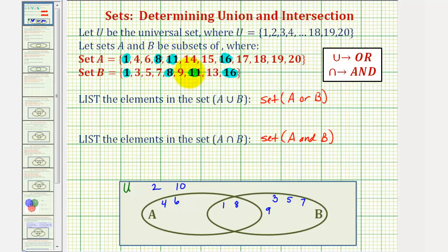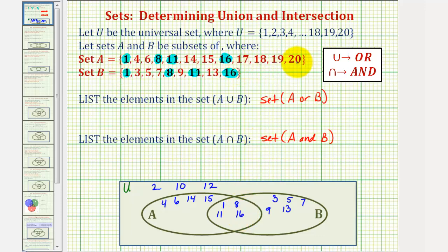Eleven is in both set A and B. Twelve is not in A or B, so twelve is out here. Thirteen is only in B. Fourteen is only in A. Fifteen is only in A. Sixteen is in both set A and B. And then elements seventeen, eighteen, nineteen, and twenty are only in set A.